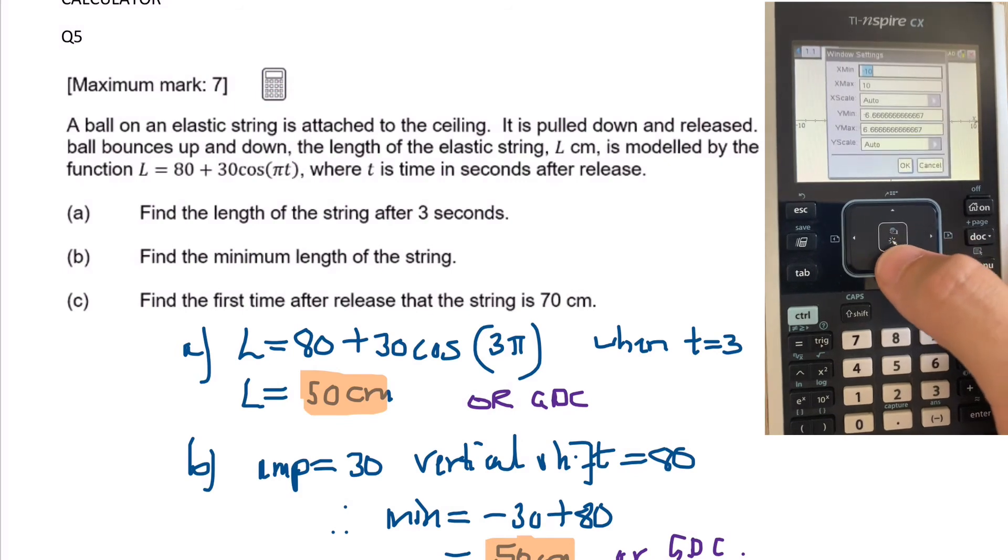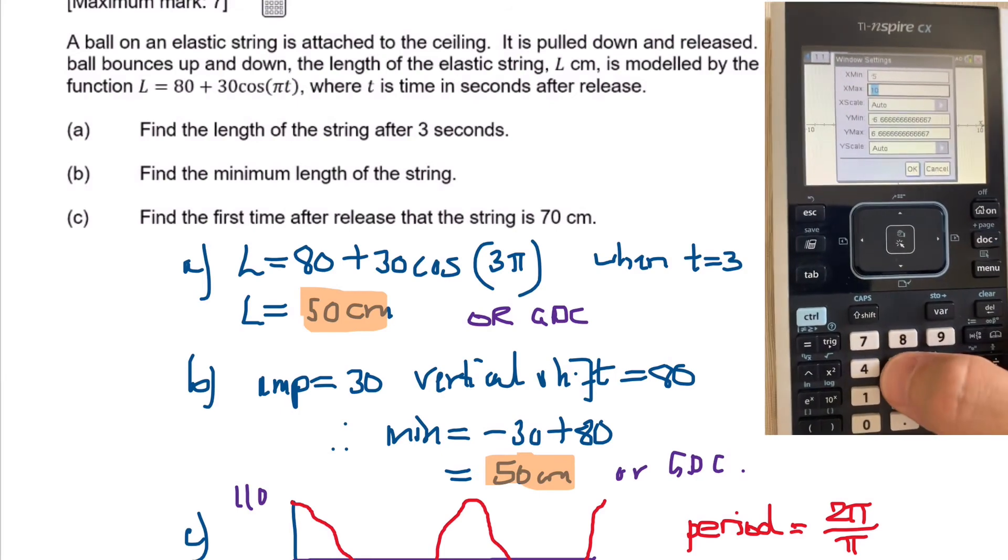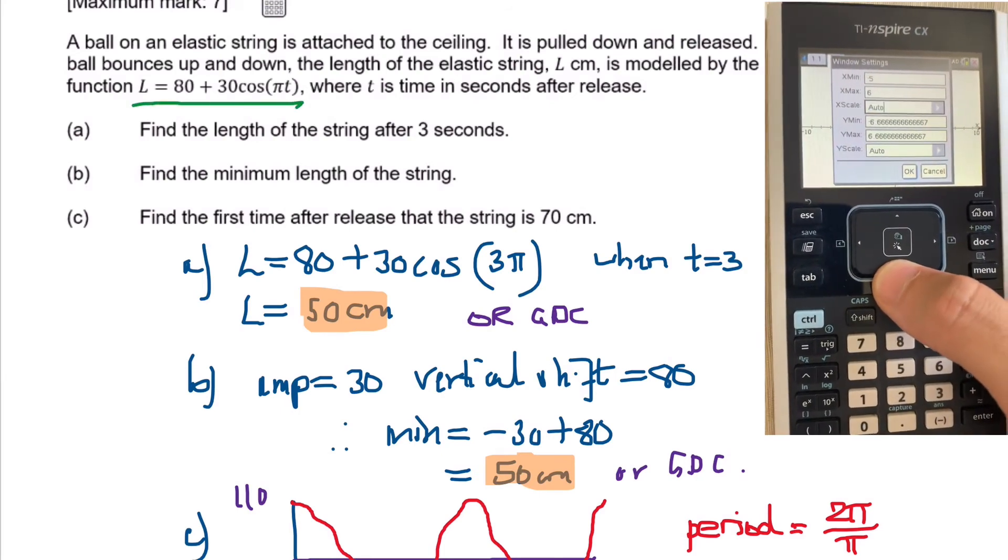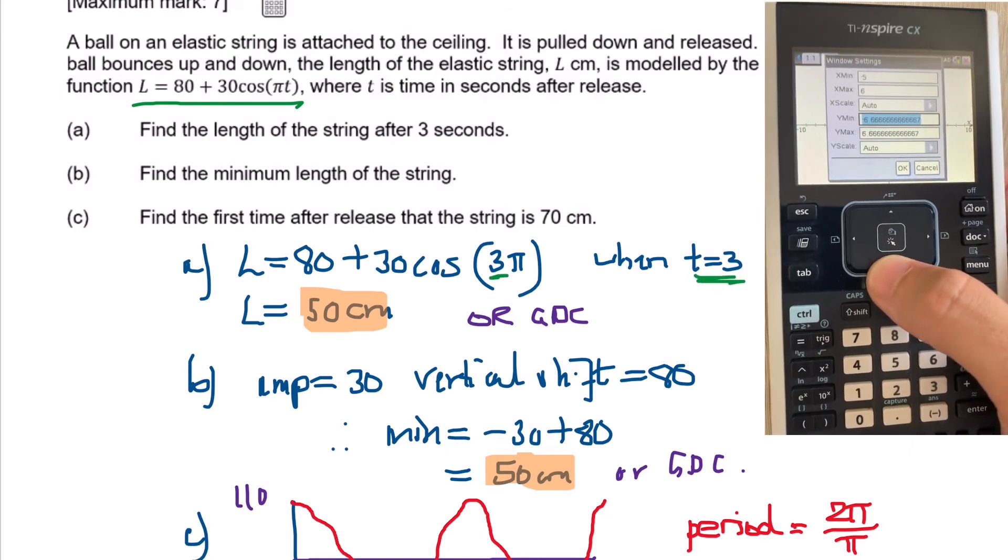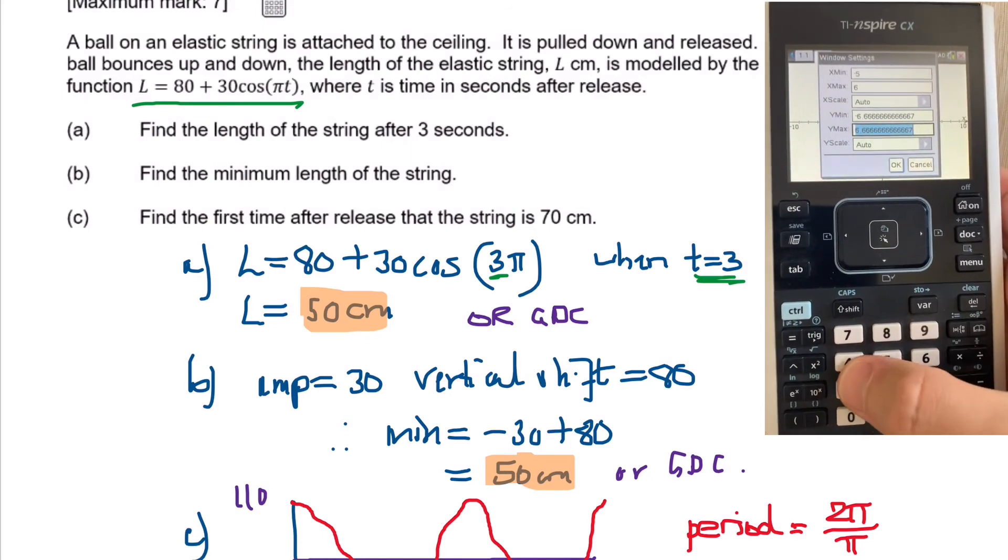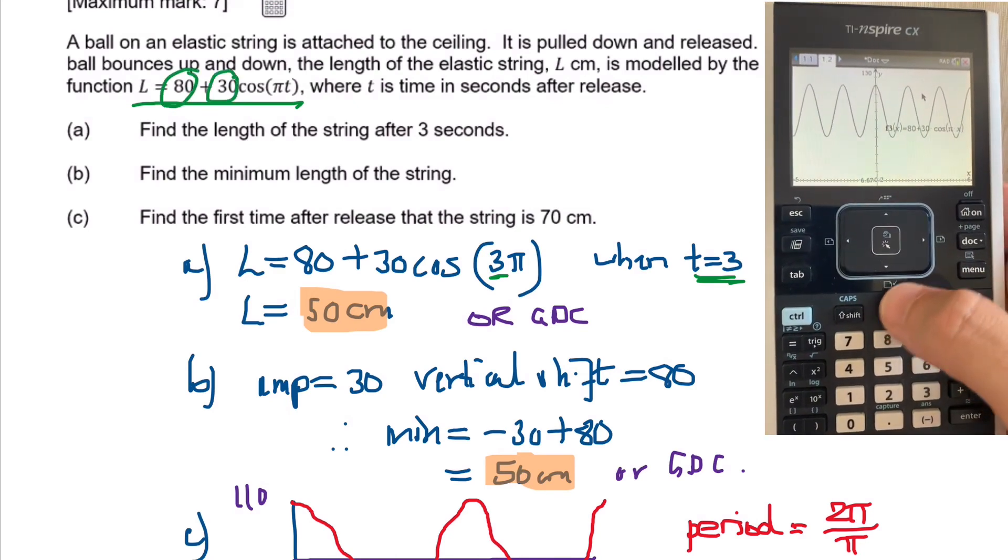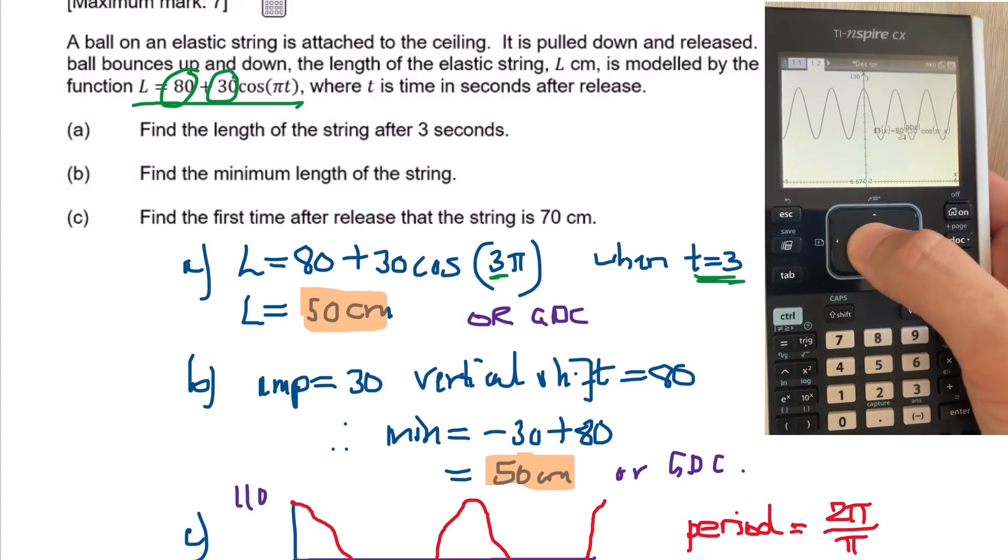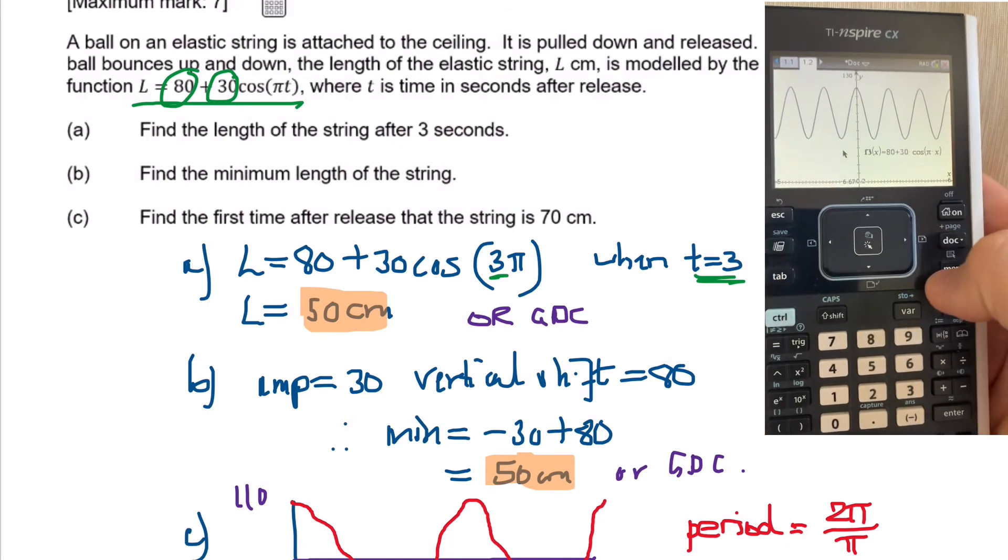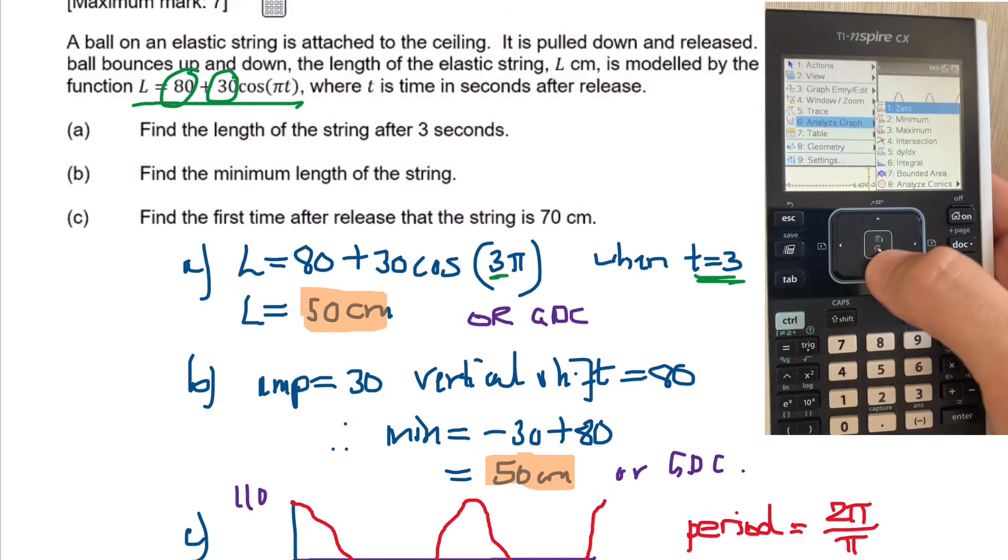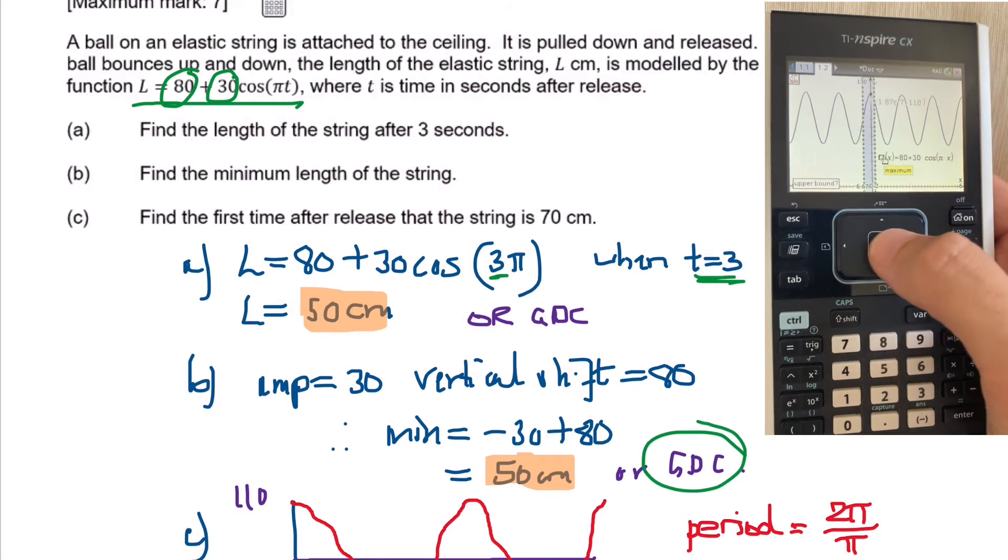Very easy if you just use the GDC. Again here, just using the GDC, just testing your knowledge on that. So you can put the function in to the GDC and then just analyze it, or you can just sub it into the formula. So when T is equal to 3, you get 50 centimeters. What's the amplitude? Well the amplitude is 30, you can see it here. The vertical shift is 80. So if the amplitude is 30, then the minimum must be minus 30 plus the vertical shift, which is minus 30 plus 80, which gives me the new minimum after the vertical shift, which is 50 also.